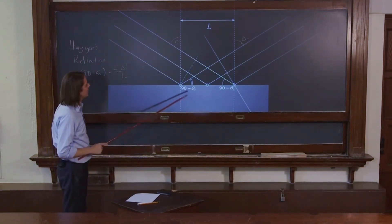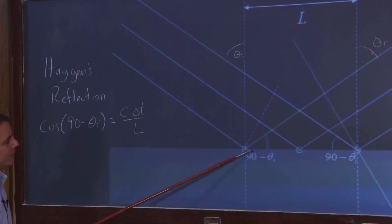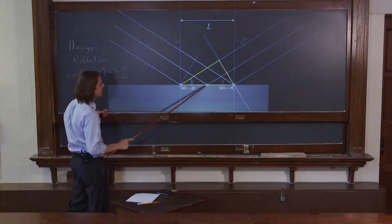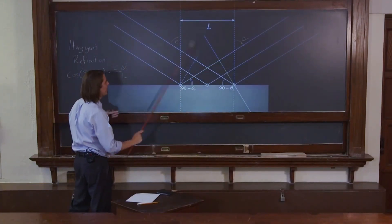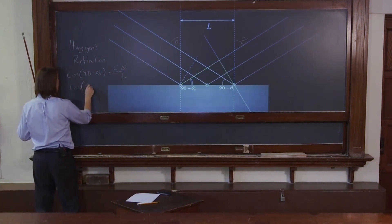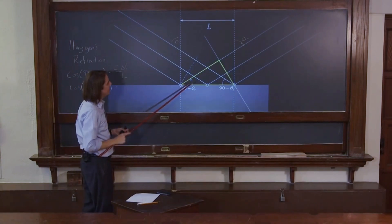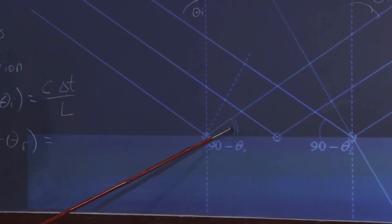And now let's look at this right triangle, because we're thinking about the other angle. We can say, okay, here is this, and then there's the right angle right there. So we can say, what is the cosine of 90 minus theta r? Well, it's the adjacent. And that is, again, the c delta t.